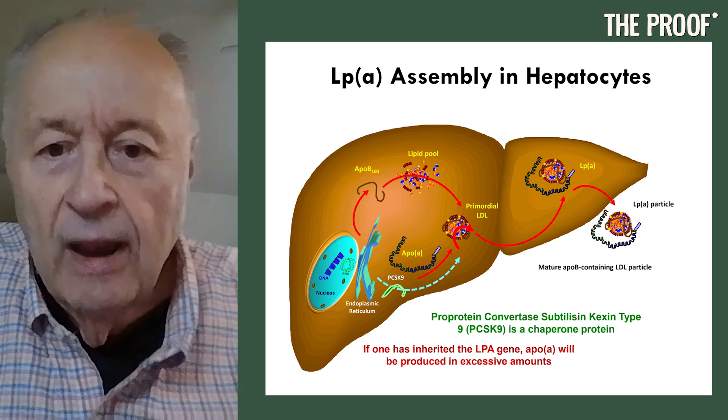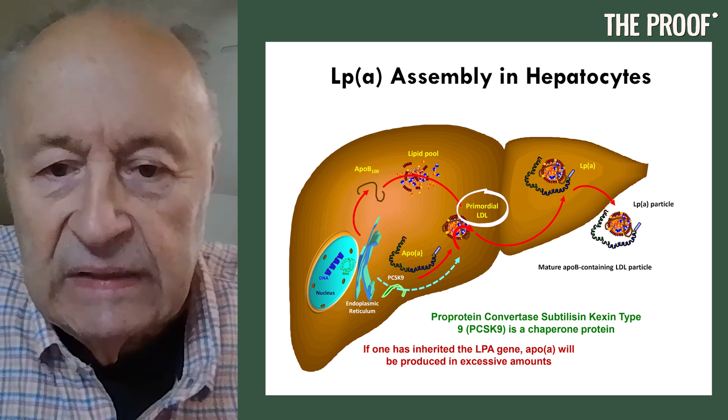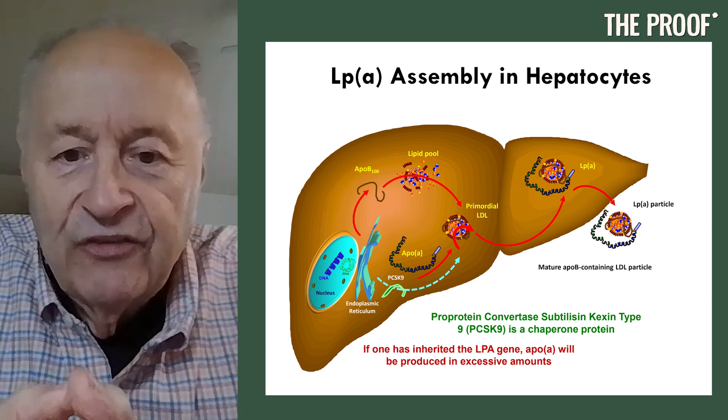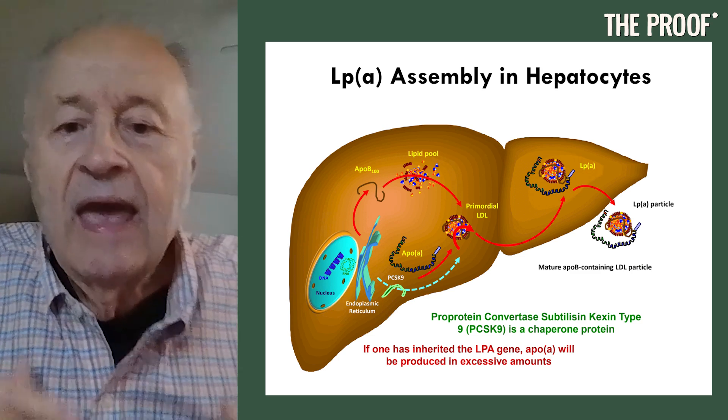Then there was a belief that between hepatocytes and the plasma, in a space called the space of Disse — D-I-S-S-E — that's where ApoA would jump on the ApoB moiety of an LDL particle and then be released into plasma. Now the consensus, just over the last couple of years, is that apoprotein little a is made in the liver, but the liver also makes what are called primordial LDL particles, and ApoA joins the ApoB within the hepatocyte and is then secreted as a whole particle. This is important because if we understand that construction step, we might be able to modify it and affect the production of this undesirable lipoprotein.